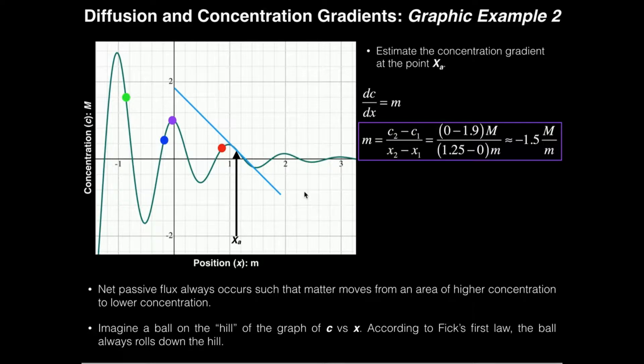Now let me ask you a question just conceptually. At this point what is the sign of the concentration gradient? Well the slope is negative right here so I would expect the concentration gradient to be negative.